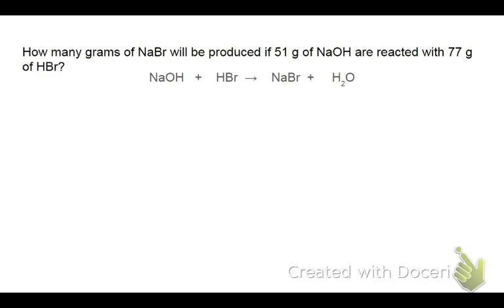Notice that we're given two different numbers here. We are told that we are going to be working with 51 grams of sodium hydroxide, and we're going to react that with 77 grams of HBr. We're actually going to have to do two separate stoichiometry problems, and then we're going to see which answer gives us the lowest amount. That's going to be our correct answer, because that means we're figuring out what we're running out of first. Whatever we run out of first, we cannot progress past that.